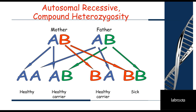There is another way for autosomal recessive disorders to be presented, which is compound heterozygosity. In this case, the green color represents a different mutation in the same gene. The mother is healthy with one normal copy and one defected copy with a red mutation; the father has one normal copy and one defected copy with a green mutation. The end results are the same: 25% healthy non-carriers, 50% healthy carriers, and 25% affected — but in a compound heterozygous state, with both gene copies defected each due to a different mutation.